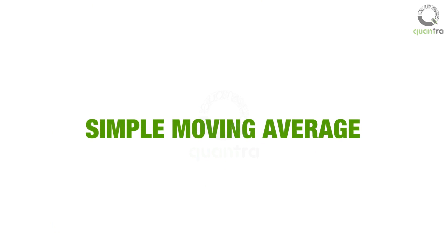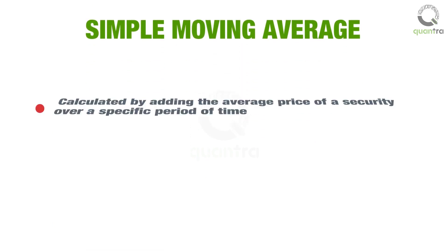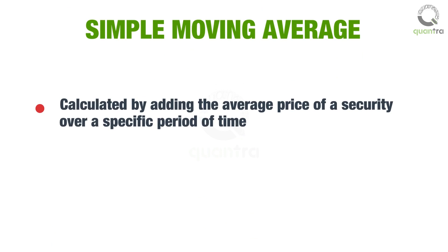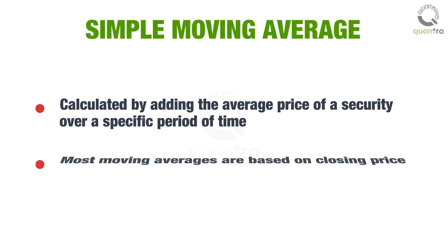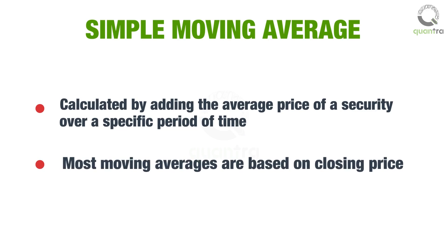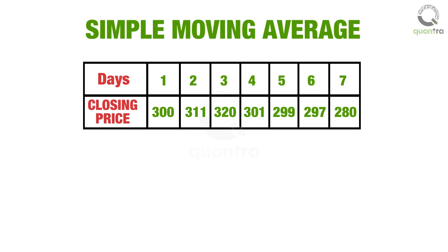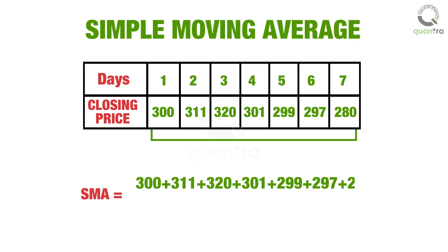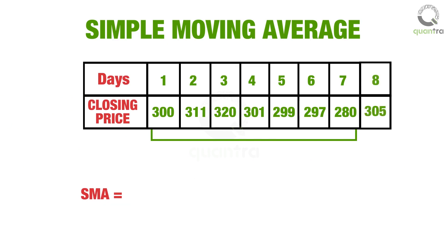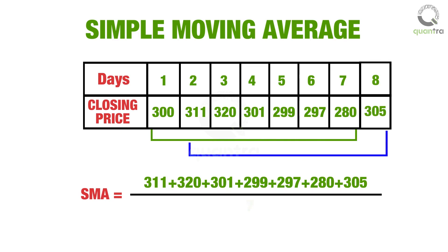SMA is a moving average calculated by adding the average price of a security over a specific period of time. Most moving averages are based on closing price. For example, a 7-day simple moving average can be calculated by adding the last 7 days' closing prices and dividing them by 7, followed by dropping the first data point and adding the new data point to calculate the SMA, and so on.